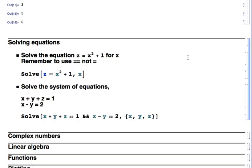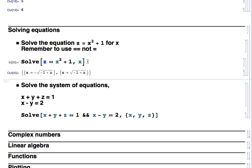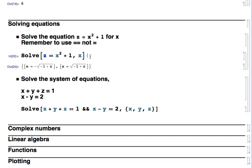Now we'll look at solving equations. Mathematica has a Solve function. We give it the equation z equals x squared plus 1 and solve for x — using a double equals sign for logical comparison, not a single equals which does assignment. Running that gives two results — the plus and minus square roots — so we get a list with both answers: minus the square root of z minus 1, and plus the square root of z minus 1.